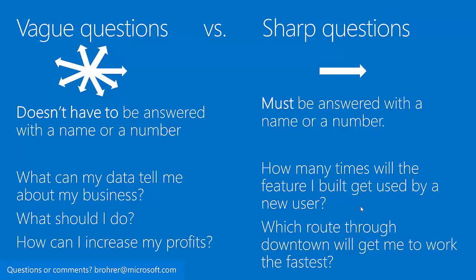If you have a vague question, it doesn't have to be answered with a name or a number. Imagine a genie that will answer any question truthfully but as unhelpfully as it can. If you ask something vague like, 'How can I increase my profits?' you may get an answer like, 'Work harder' — true, but not specific enough to be helpful. Whereas if you ask a sharp question that must be answered with a name or a number — like, 'How many times will the feature I built get used by a new user?' — the genie can't help but give you the correct numerical answer. There's no wiggle room. That's the type of question you want to ask your data.